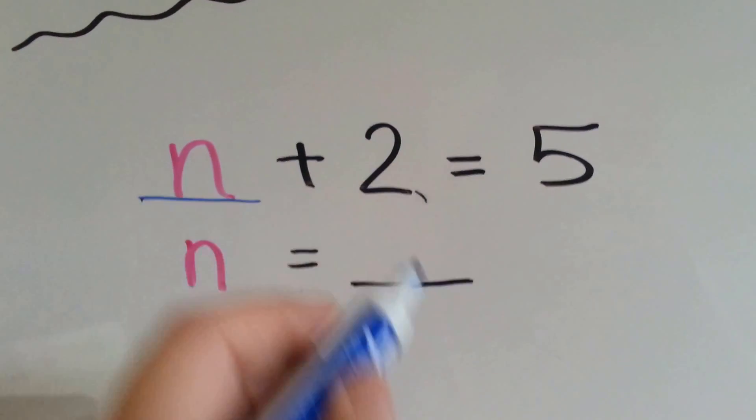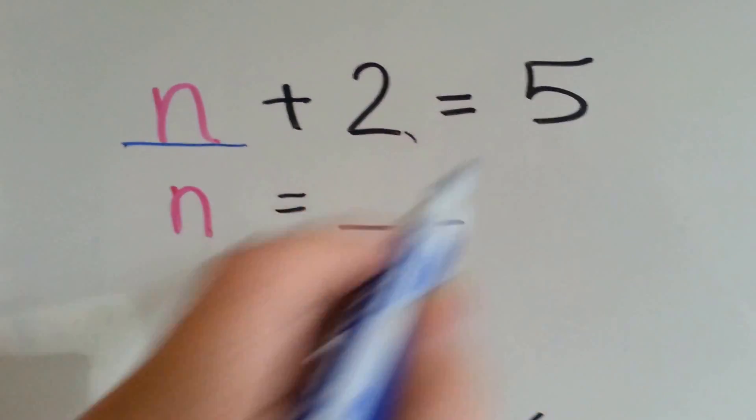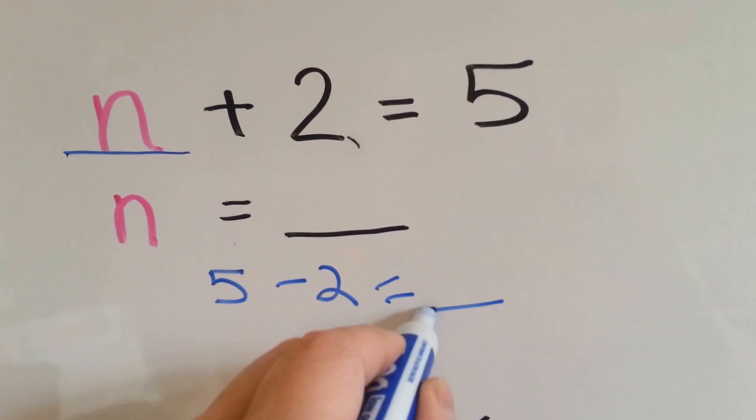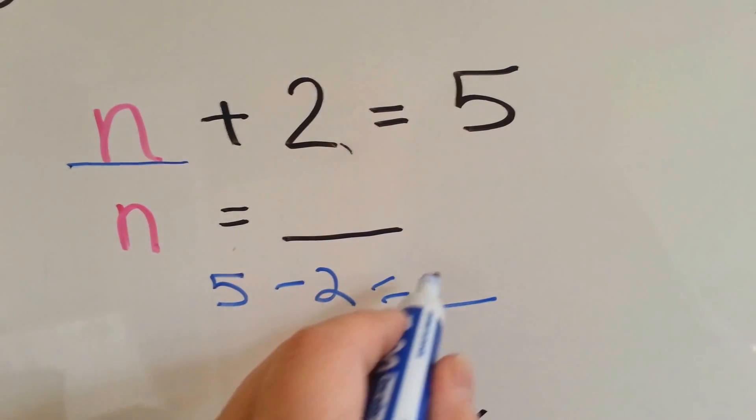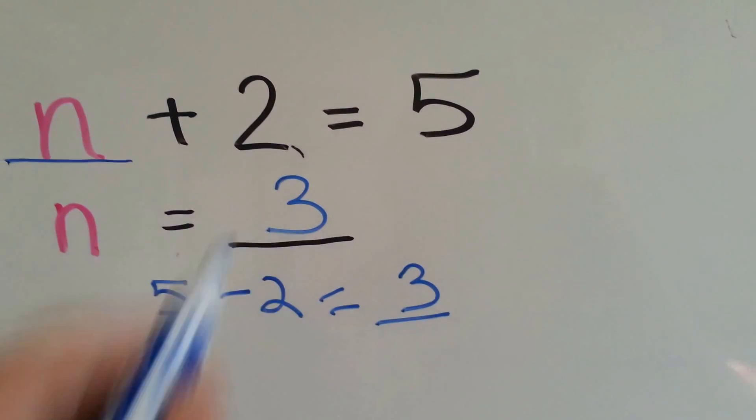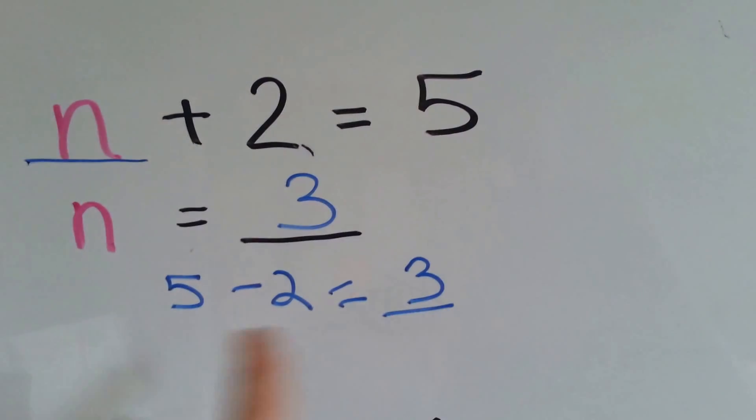Well, we could just do reverse and say 5 take away 2 equals what? 5 take away 2 equals 3. That means the n equals 3. See how I did that? I went backwards to get the answer.